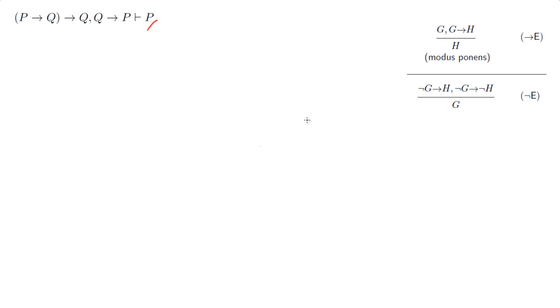What's going on guys? Dreams with another natural deduction problem to solve. This time we want to prove P. There's a rule that says if not P implies something, and we've got not P implies not something, we can get P. This is the negation elimination rule, very useful, and we use it a lot.